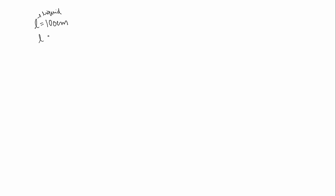In the question we have a cylindrical tube of length 100 cm. It contains some mercury inside it. The coefficient of real expansion of mercury (gamma) is given as 18 × 10⁻⁵ per degree Celsius, and gamma of the glass tube is given as 2.7 × 10⁻⁵ per degree Celsius.